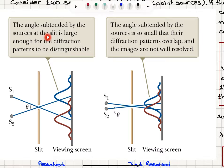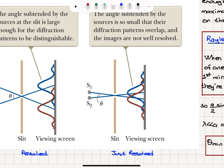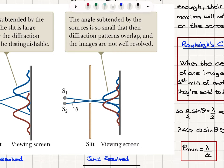The angle subtended by the sources at the slit is large enough for the diffraction patterns to be distinguishable. That is to say, the maxima of these two sources on the diffraction pattern do not overlap, so they're clearly resolved. On the other hand, if the angle subtended by the sources is so small that their diffraction patterns overlap, the images are not well resolved.